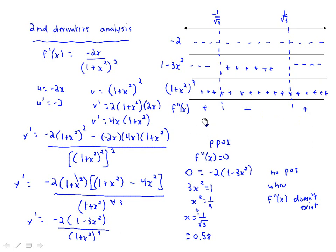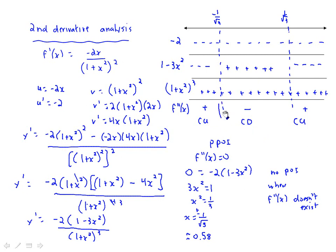With two negatives, the second derivative is positive, meaning concave up. Then with one negative it's concave down, and then concave up again. So there is a point of inflection at x equals negative 1 over root 3, and another point of inflection at x equals positive 1 over root 3.